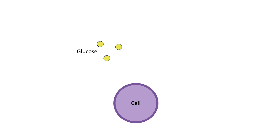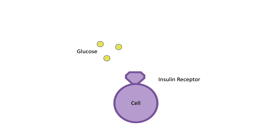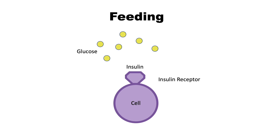In this demonstration, we have glucose, which is represented by the yellow circle, the cells — such as the liver cells — shown in the big circle, and the insulin receptor. Insulin is a hormone naturally produced by the body in response to feeding. When we eat, nutrients like glucose and protein can stimulate insulin. But for the most part, we focus on the effect on glucose when thinking about insulin resistance.